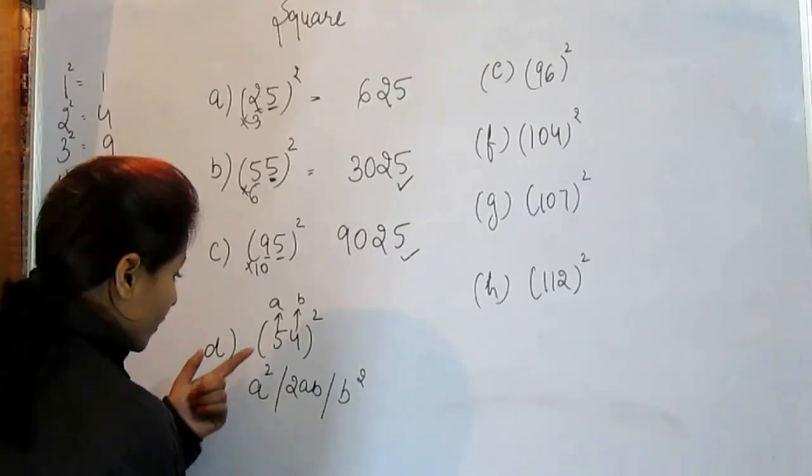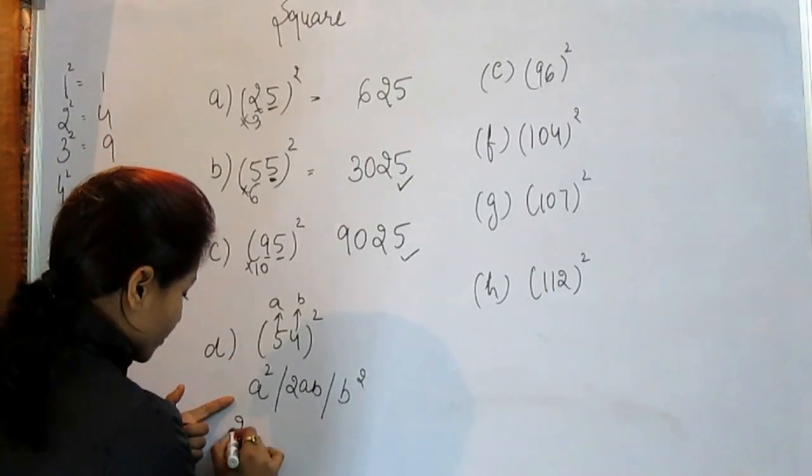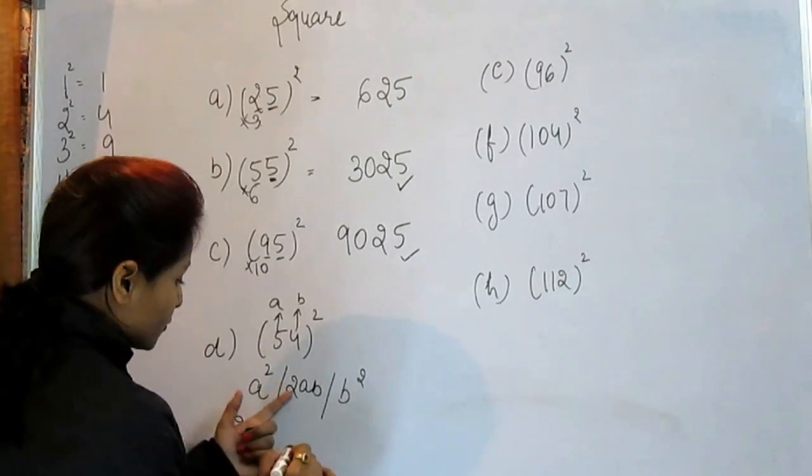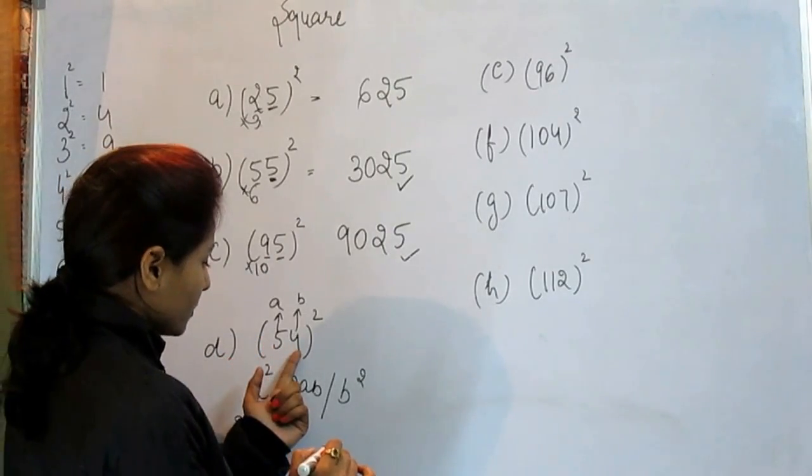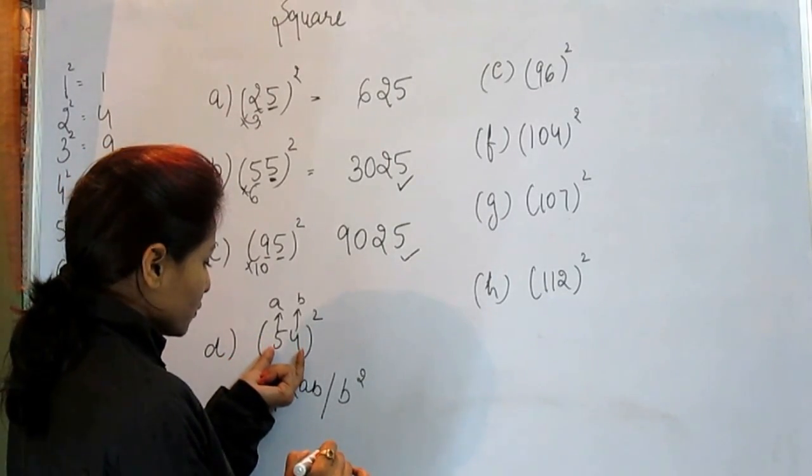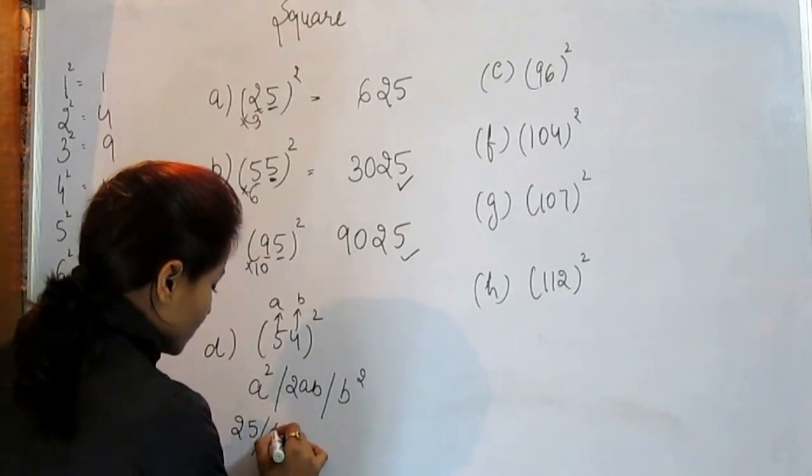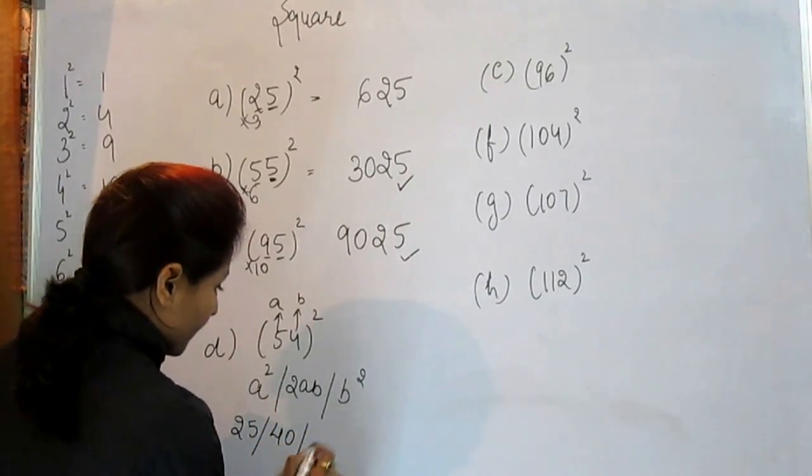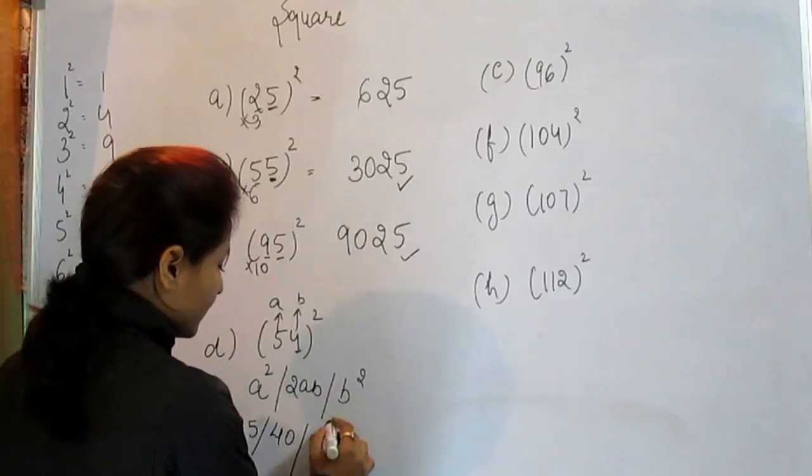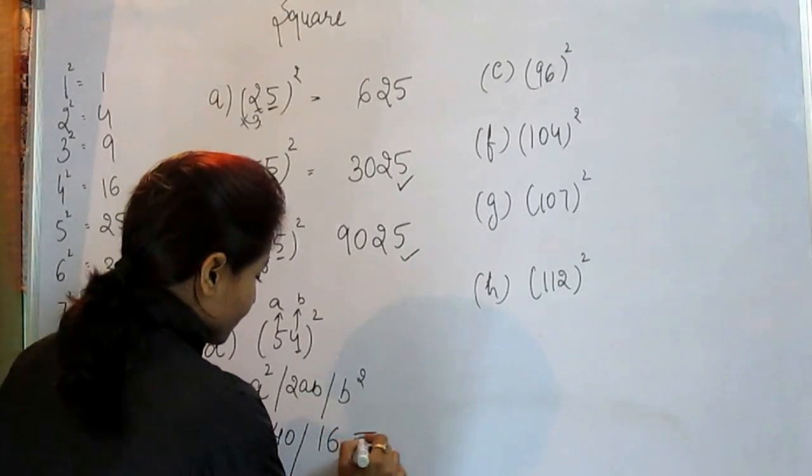So square of 5 is 25. 2ab: 2 into 5 into 4, 5 into 4 is equal to 20, 20 into 2 is equal to 40. And what is the square of b? That is 16.